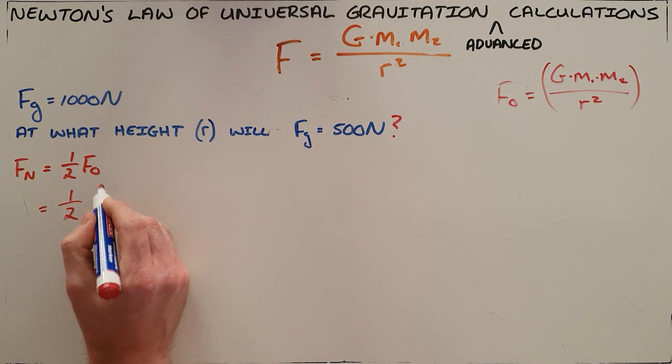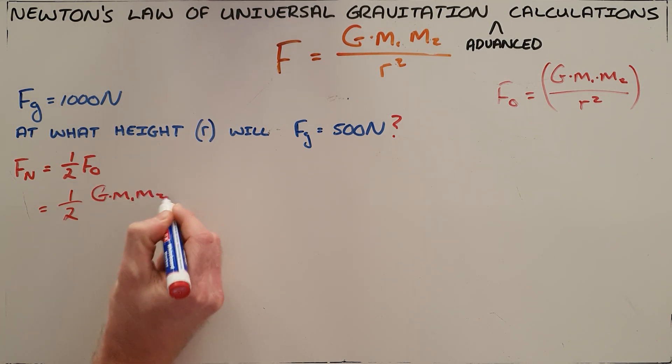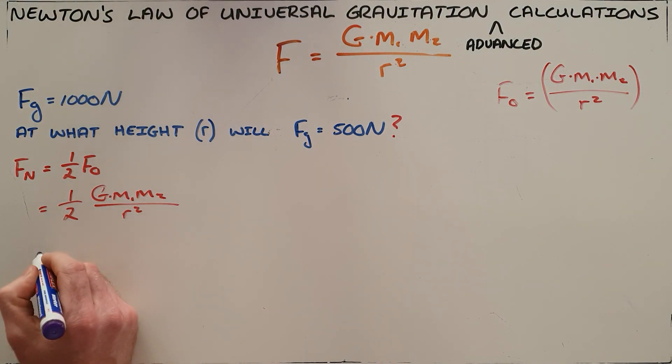But in order to find that height, we need to include the new number into the r² term, which we do by saying that this is again G·m₁·m₂ over...